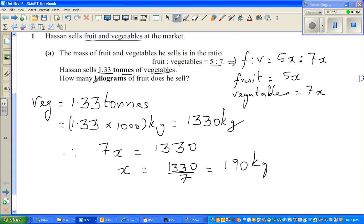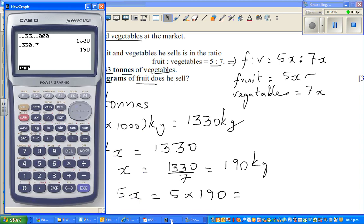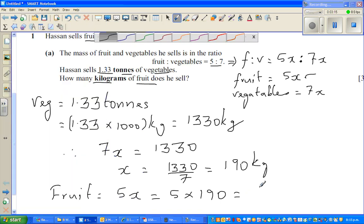So the question is how many kgs of fruit did he sell. So fruit is 5x. So fruit would be 5 times 190, which gives you 950 kgs of fruit he sold. So this information is very important. We will save this because in the next question this is used.